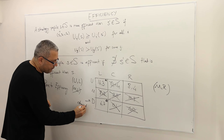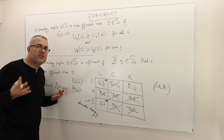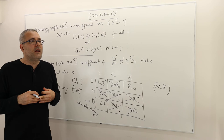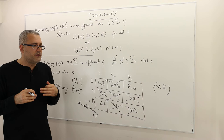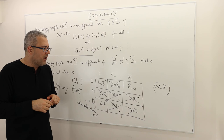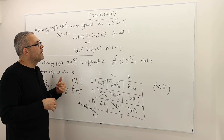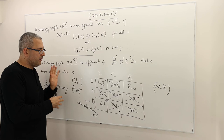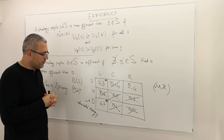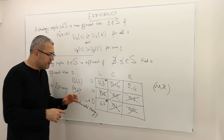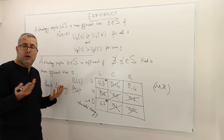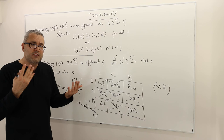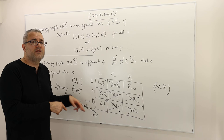Remember we said D is a dominated strategy. So are domination and efficiency related? Once again, the definitions are completely logically independent, and there is no always direct relation between them. But I cannot say they are irrelevant — there is some relevance. Strict dominance and efficiency are not the same concepts; they're logically independent. D is a dominated strategy, but nevertheless, the strategy profile DL — which includes the dominated strategy — is actually efficient. So you may have a dominated strategy, but the strategy profile which includes it could actually be efficient.